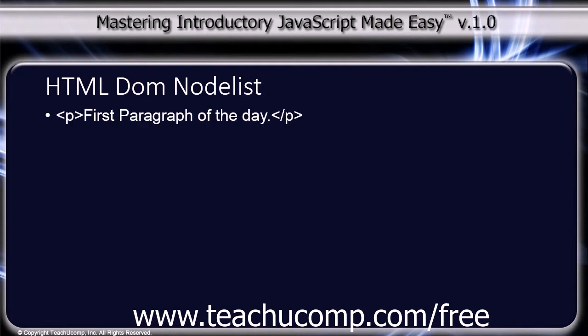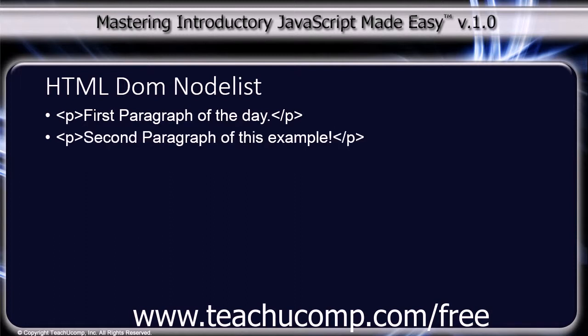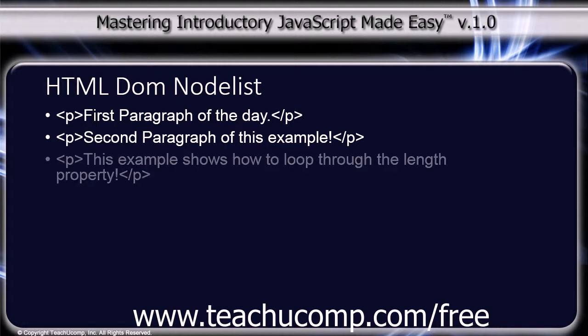The HTML contains three paragraph tags: 'First paragraph of the day.' followed by its closing tag; 'Second paragraph of this example!' followed by its closing tag; and 'This example shows how to loop through the length property!' followed by its closing tag. Then the script tag.